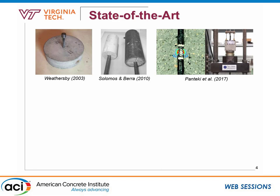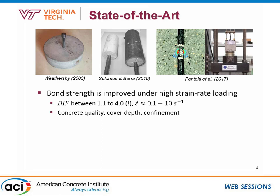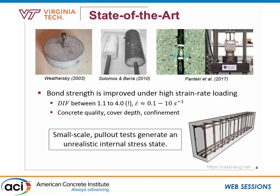Looking at the state of the art: some great prior work has been done using small-scale pullout-type specimens — rebar embedded in concrete, subjected to load to see what happens. They found that bond strength is improved under high strain rate loading, with reported increase factors ranging from about 1.1 up to as high as 4, which is higher than material increase factors for concrete and steel at that strain range. Concrete quality, cover depth, and confinement are key parameters influencing that range. However, what we actually design in practice tends to be flexural members and large-scale structures, not small pullout tests — so what is the link between those results and practice?